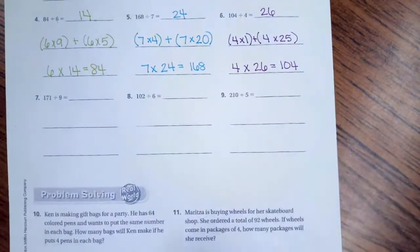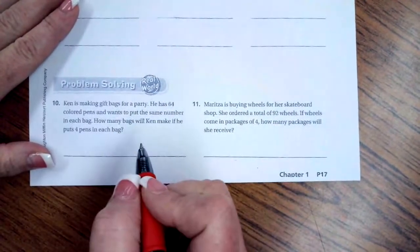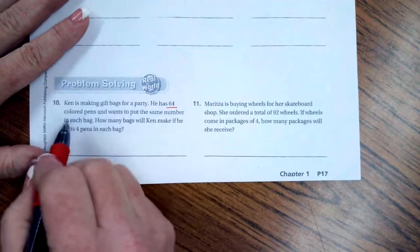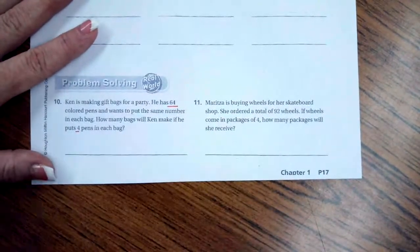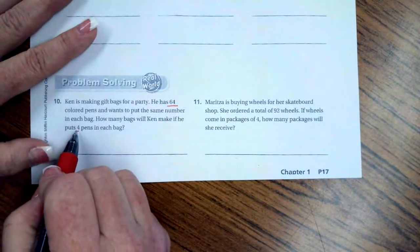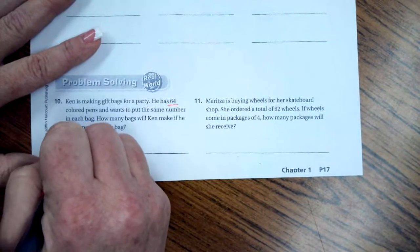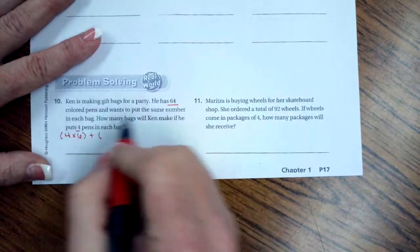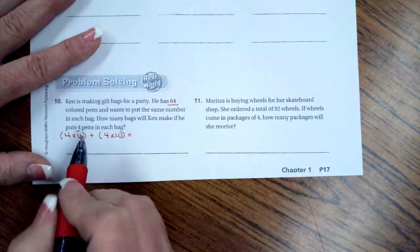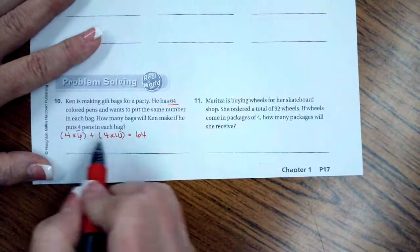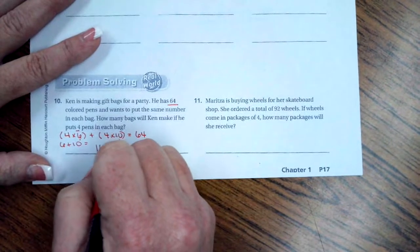You guys try and do 7 through 9. I've done a whole bunch for you. Go back and look at them if you need to. We're going to go down to number 10. It says, Ken is making gift bags for a party. He has 64 colored pens. He wants to put the same number in each bag. How many bags will Ken make if he puts 4 pens in each bag? So they want us to break these up again just like we were with the other one. So I know that 4 times 6 is 24, which ends in a 4. That's nice. So I'm going to say 4 times 6 plus, if I take 24 away from 64, I'm left with 40. So that's 4 times 10.